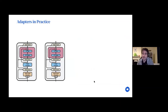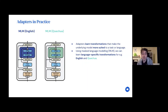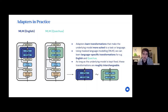In the multilingual setting, we can use these adapter parameters to learn transformations that adapt and make the underlying model more suitable to a specific target setting of interest. We might train these adapter parameters using masked language modeling to learn language-specific transformations for a particular language, such as English on the left or Quechua on the right. Because we keep the underlying body of the model unchanged, we can simply swap in and replace the English adapter parameters with adapter parameters trained on Quechua — making the model easily applicable to both English and Quechua simply by plugging these different adapter parameters in and out.